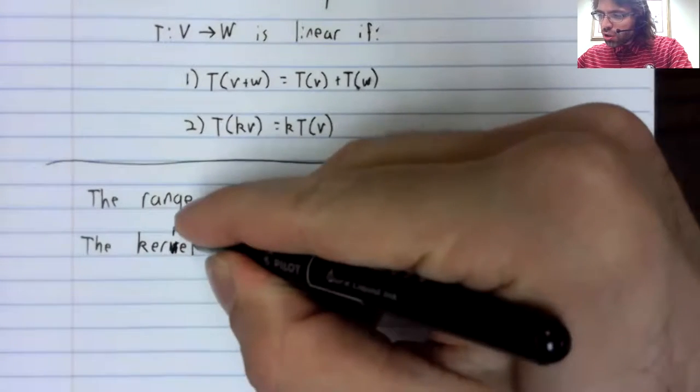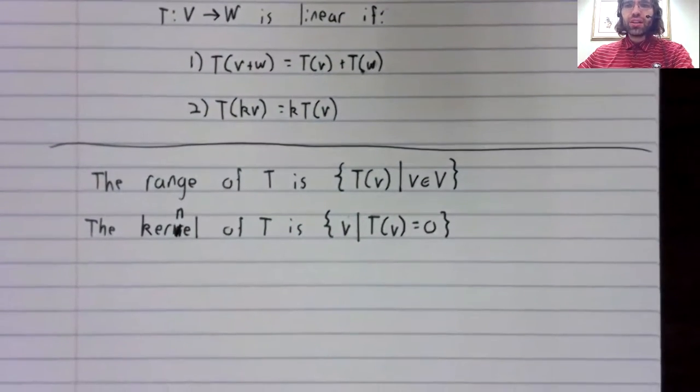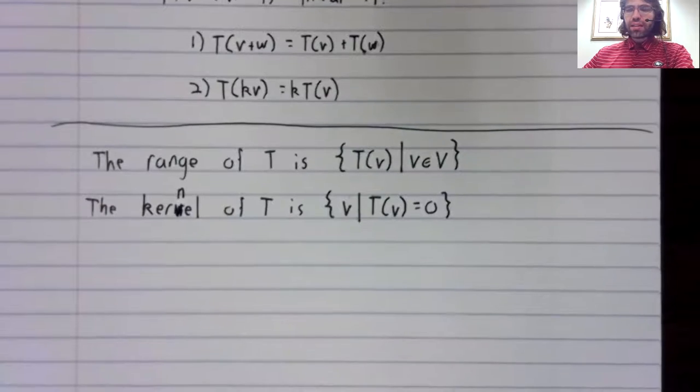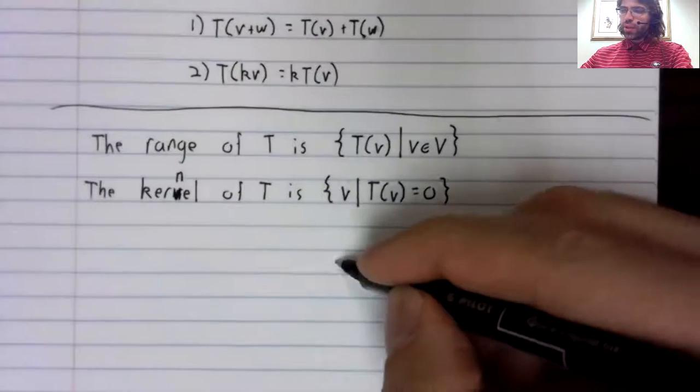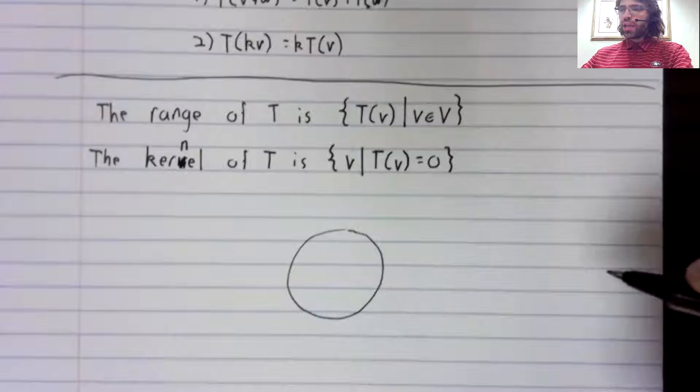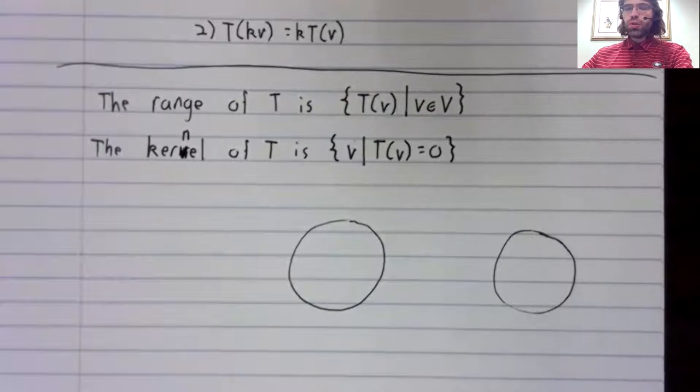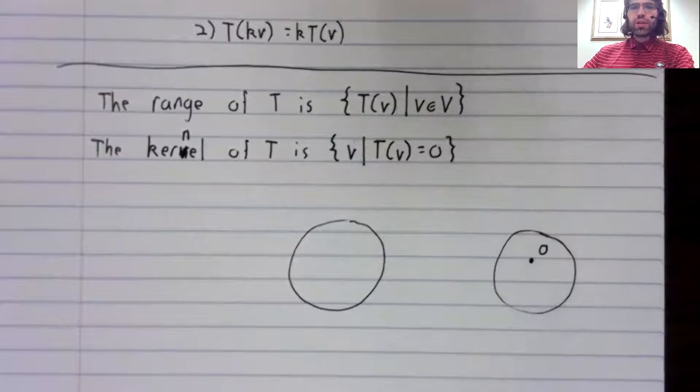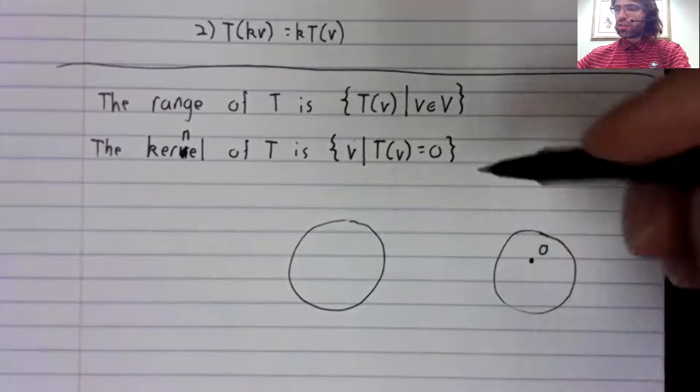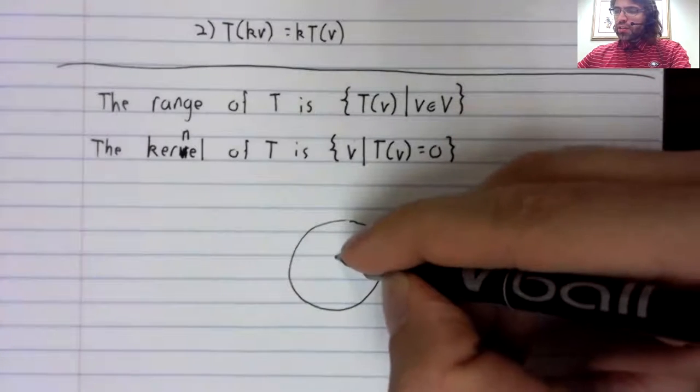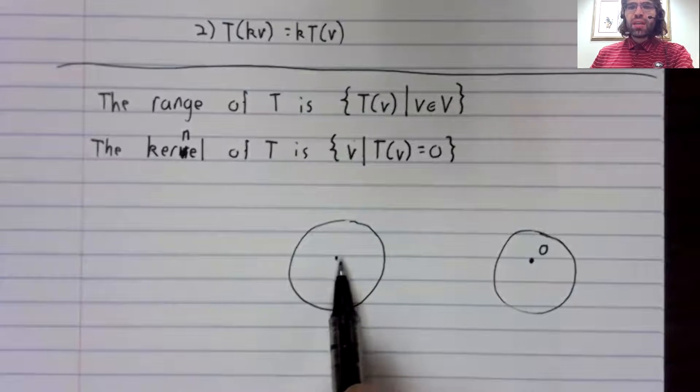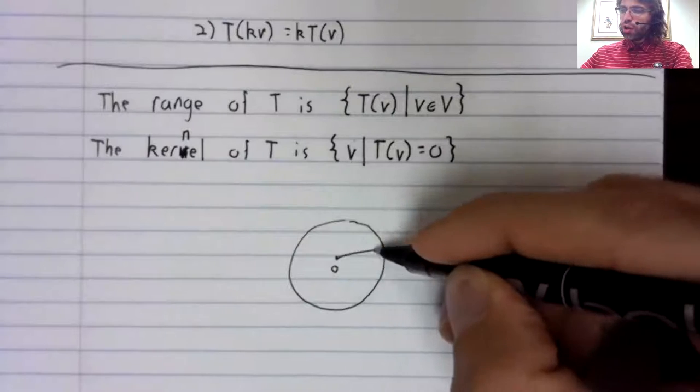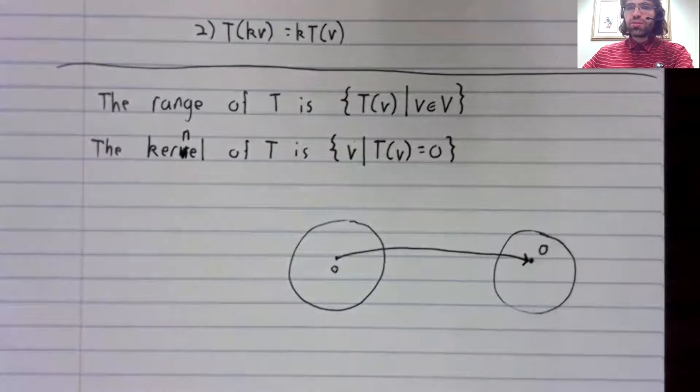The kernel with an N is all the pre-images of the zero vector. So we've got our domain, and we've got our codomain. And our codomain is a vector space, so it contains the zero vector. And at least one vector in the domain is mapped to the zero vector. Zero is always mapped to zero.